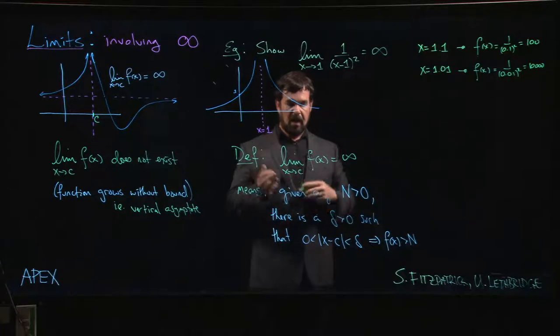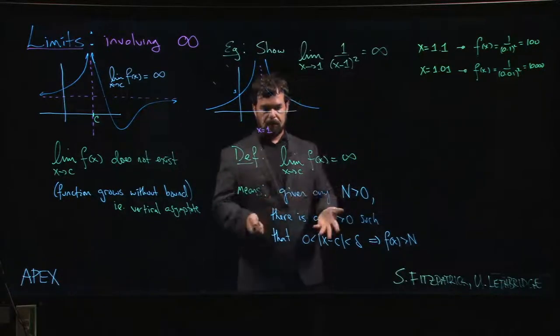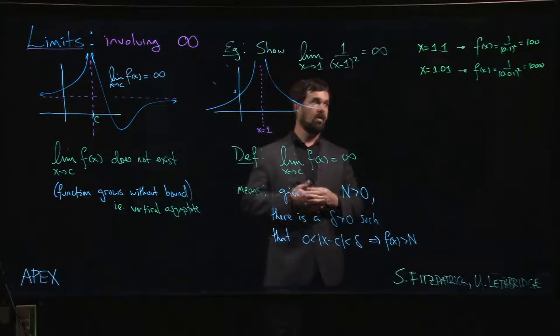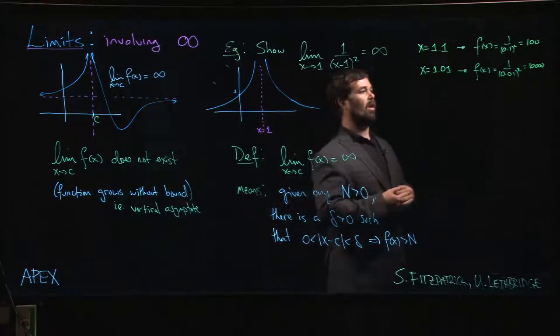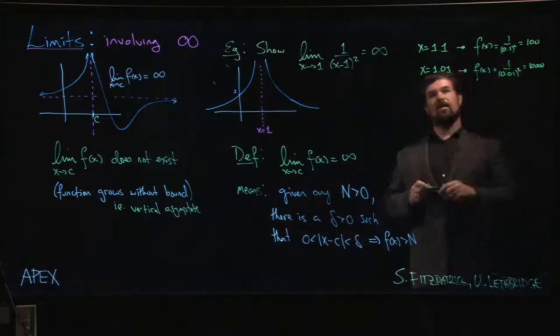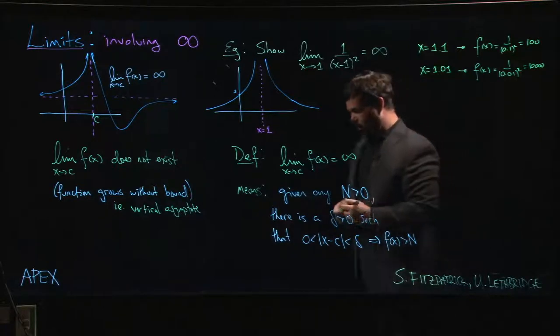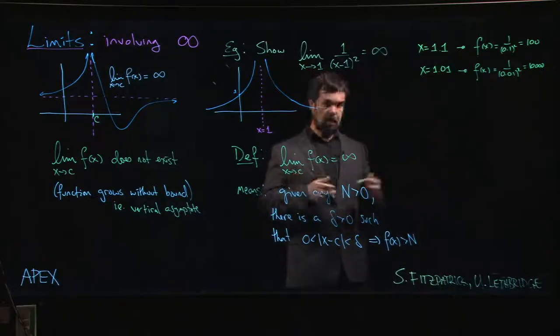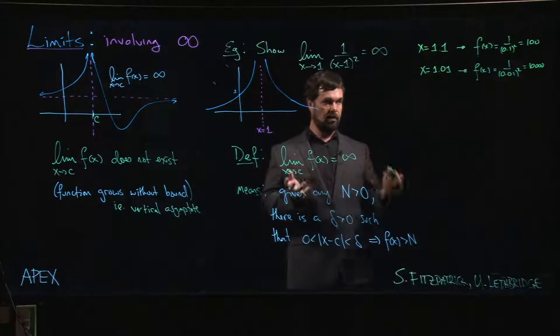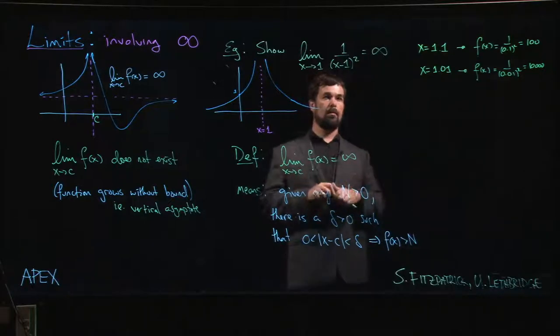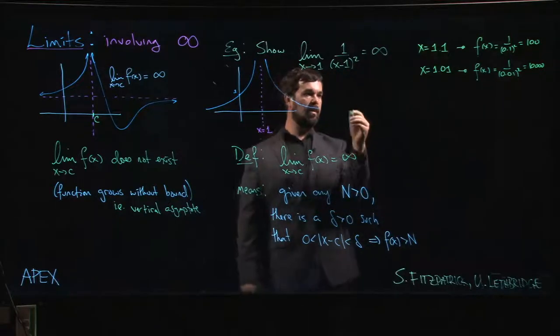That's essentially the argument you make in the precise definition. If somebody says I want f of X to be bigger than 10,000, I say fine, take a delta that's equal to 0.01. If somebody says I want it to be bigger than a million, I say okay, take a delta to be 0.001, and so on.